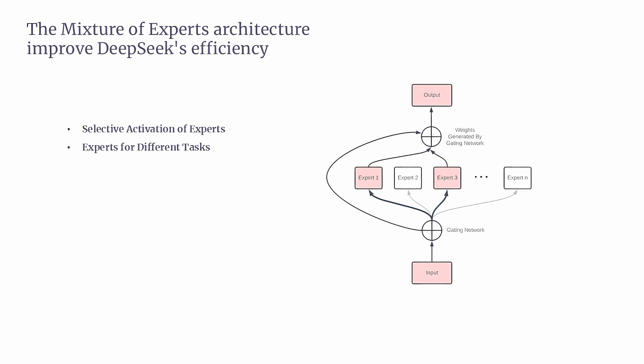The second feature: experts for different tasks. Each expert in DeepSeek is trained for a specific task. For example, one expert might specialize in grammar and writing, another could be focused on factual knowledge, and yet another might excel in coding and mathematics. Because of this, DeepSeek can handle a wide range of tasks with high accuracy. The system is modular, meaning new experts can be added without significantly increasing computational demands.